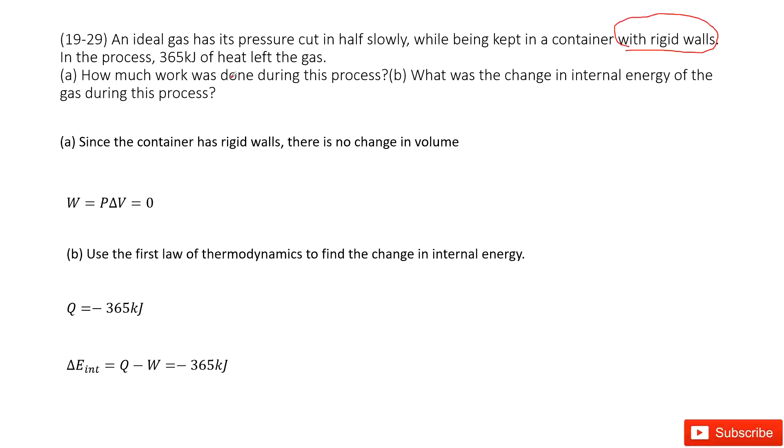As we learned in our textbook, the work done by the gas is W equals P times delta V. We're told that delta V equals zero, so the work equals zero.